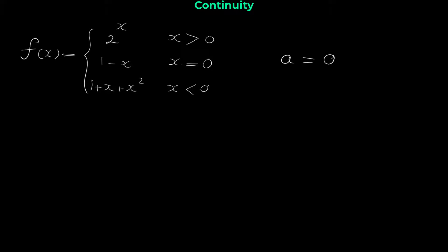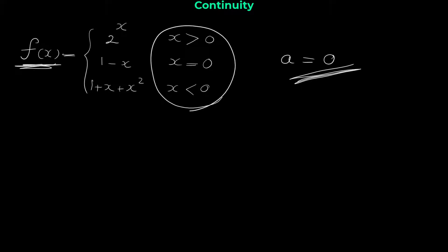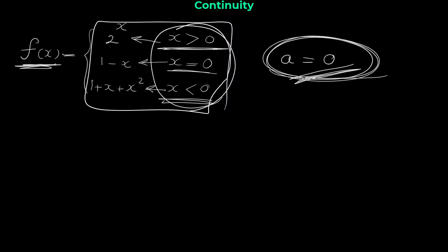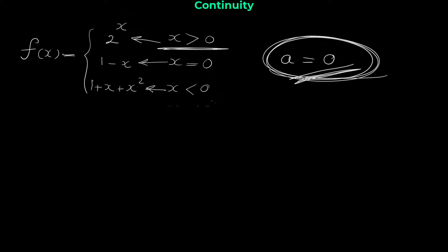We are interested in checking continuity at 0 because the equations for f of x change at 0 — when x is greater than 0 we have one equation, when x equals 0 another, and when x is less than 0 another. The rules change at the point 0, which is why we check continuity there.